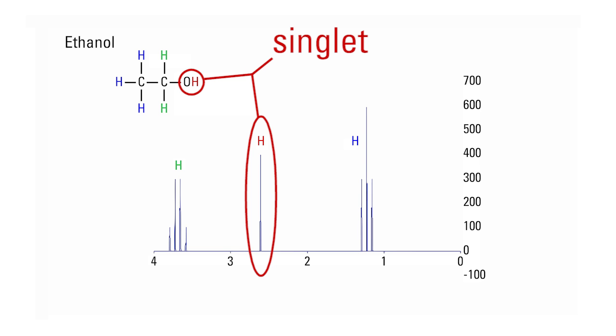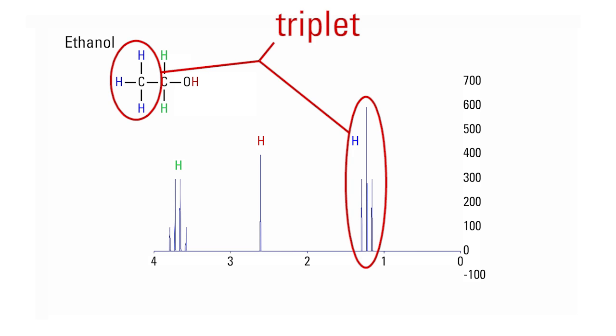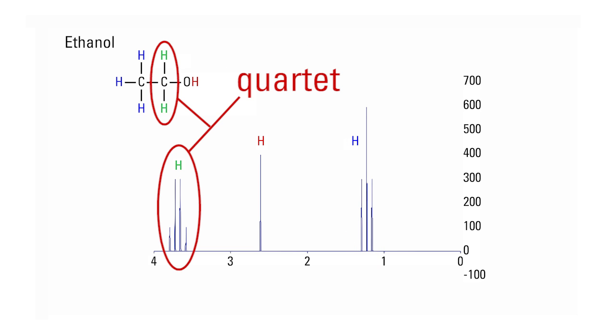Our spectrum has a singlet around 2.7 ppm. This corresponds to the OH hydrogen and a triplet around 1.3 ppm. This corresponds to the 3 hydrogens in the methyl group. The signal is split into a triplet due to the neighboring 2 hydrogens in the methylene group, and a quartet around 3.7 ppm. This corresponds to the methylene hydrogens, and the signal is split into a quartet by the neighboring 3 hydrogens in the methyl group.